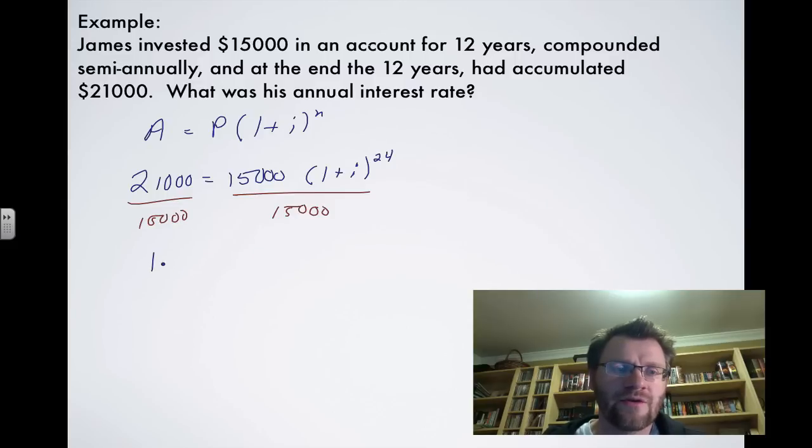And what we get here is 1.40 equals 1 plus I to the power of 24. Now, the problem is, this is raised to the power of 24. We can't get I out of these brackets, so we're going to do something called taking the 24th root. So on your calculator, you may have an nth root button, and what that is just means you could take the cube root. You could have a 3 here. You could have a 4 or 5. We're going to take the 24th root.